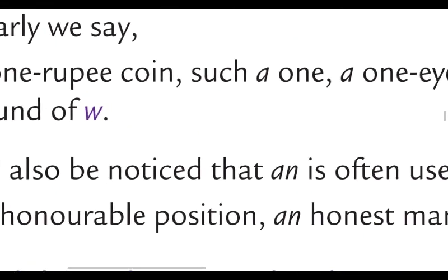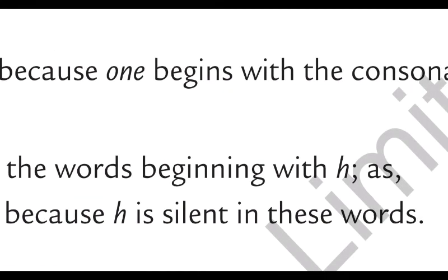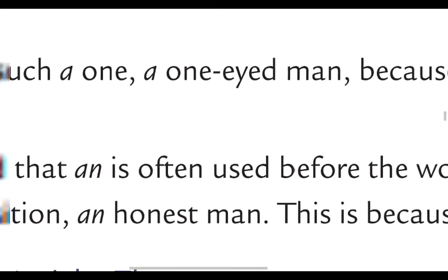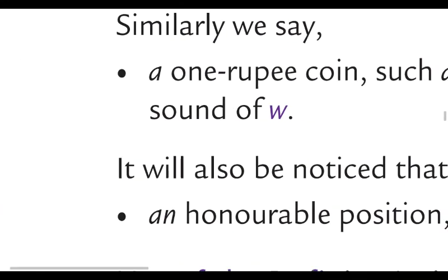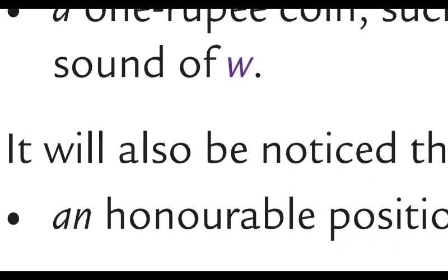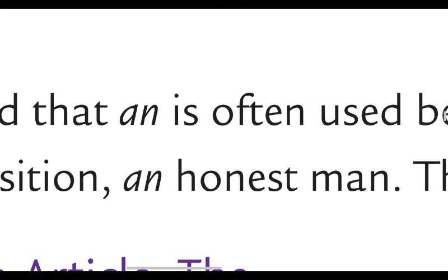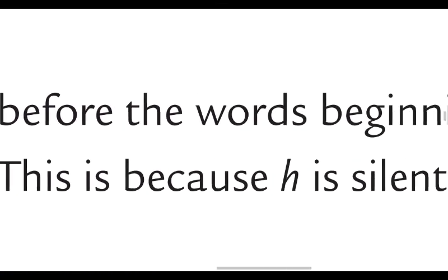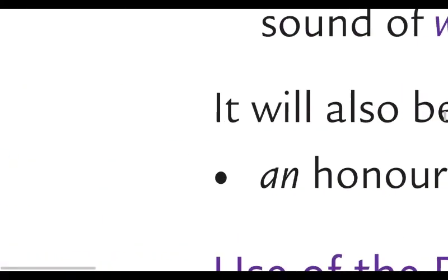It will also be noticed that 'an' is often used before words beginning with H, as the words H se shuru hote hain lekin unka sound vowel hai. For example: an honorable position, an honorable position — though this word begins with H, but it has a vowel sound. An honest man — this is because H is silent in these words, kyunki yahan par H silent hai.